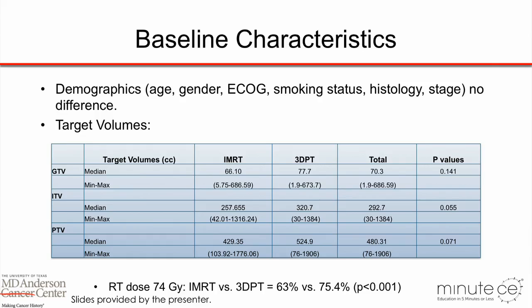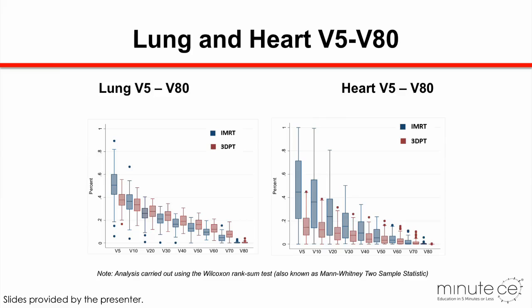Looking at target volumes, the gross tumor volume and the final planning target volume were bigger in the proton arm, and the difference was almost statistically significant. Even with higher tumor volume, a higher proportion of patients in the proton arm received higher doses of radiation. If you look at the lung volume exposed to different dose levels, proton therapy spared the low-dose volume but irradiated a larger volume of lung at the high-dose level. However, the heart was always spared with proton treatment.